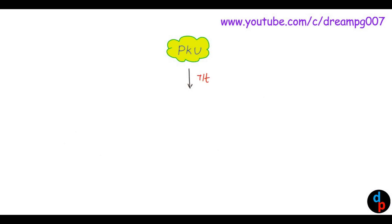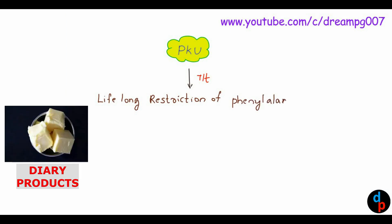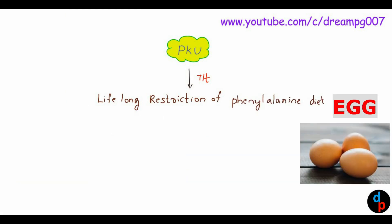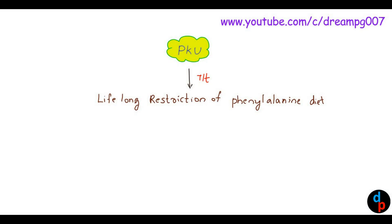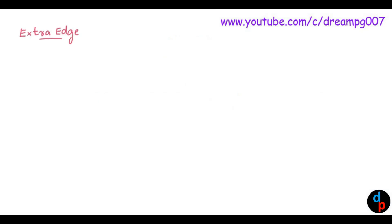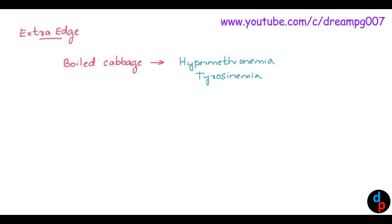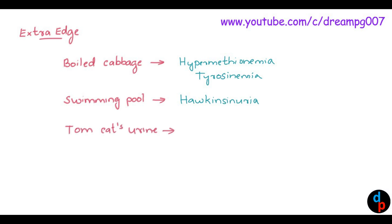The mainstay of treatment for phenylketonuria is lifelong restriction of phenylalanine-containing diets. Some additional points: urine will have a boiled cabbage odor in hypermethionemia and tyrosinemia; urine will have a swimming pool odor in hawkinsinuria; and tom cat's urine odor is characteristic of multiple carboxylase deficiency.